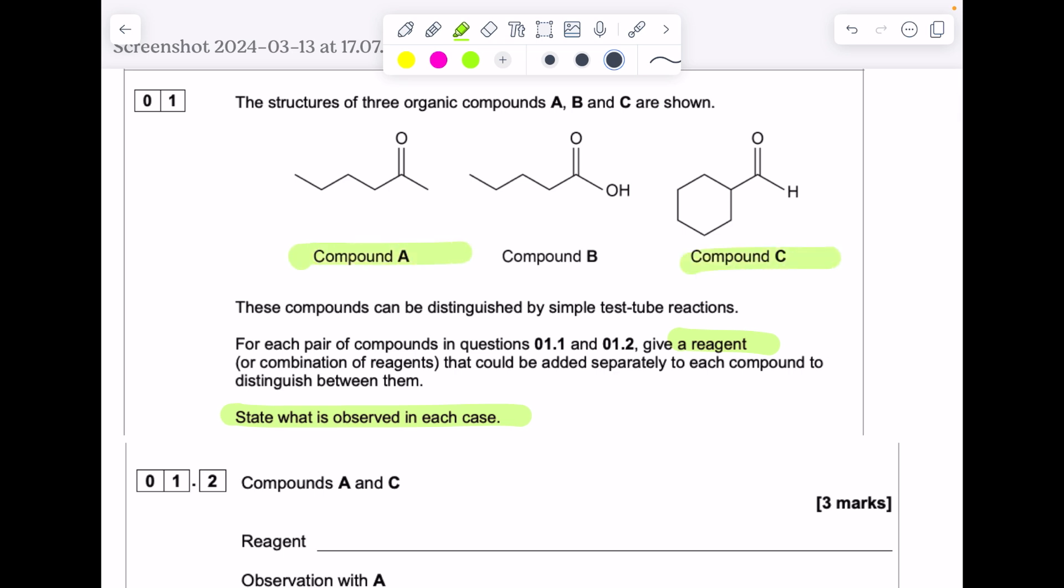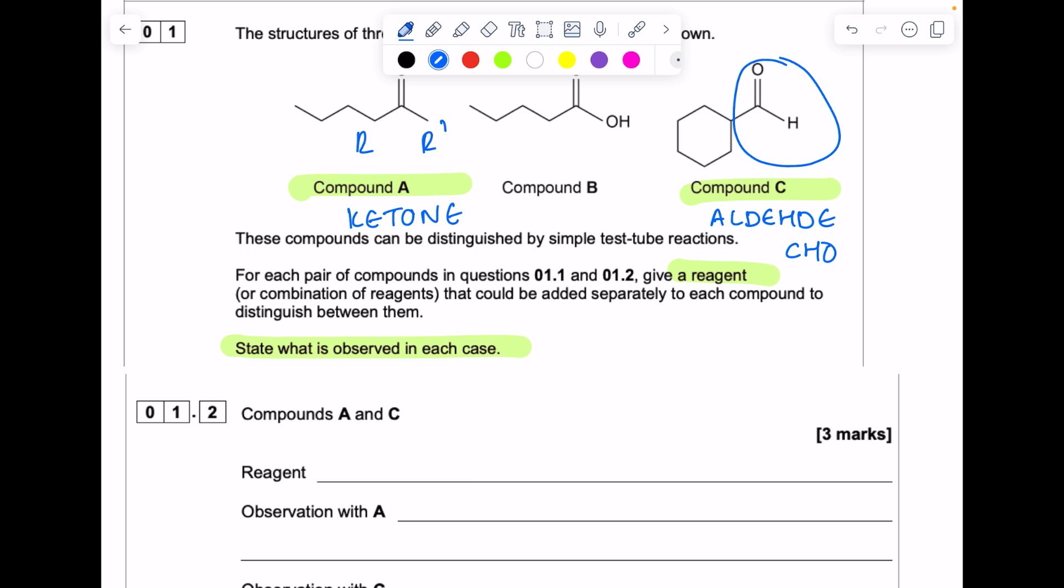So compounds A and C, let's first of all identify what homologous series they belong to. We have two different R groups here, which means with that carbonyl C double bond O, it must be a ketone. C is an aldehyde. Remember, its functional group is CHO, which we see here.